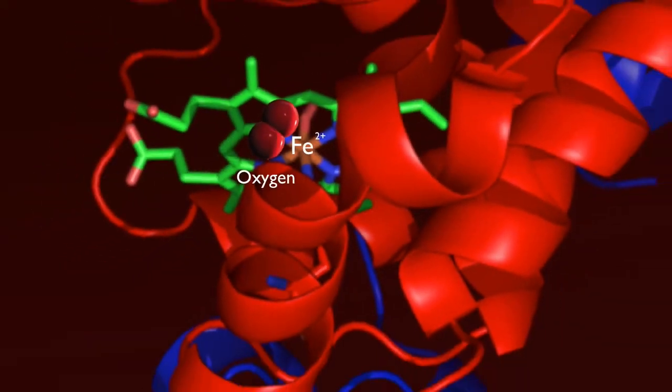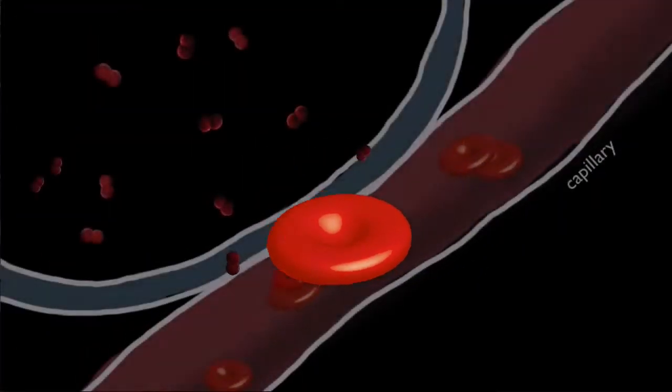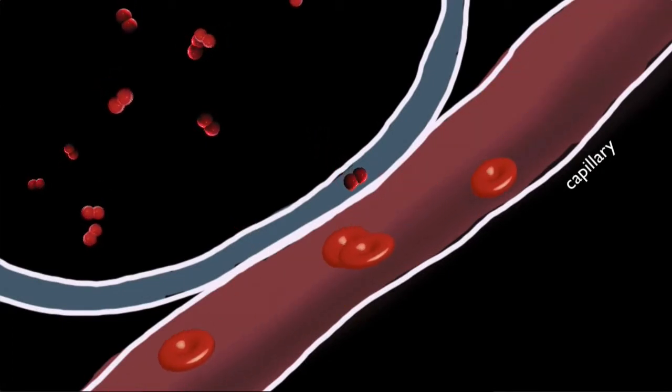So oxygen readily binds to hemoglobin, which is then transported throughout the body by the blood system. But how exactly does the hemoglobin then release the oxygen right to where it's needed?